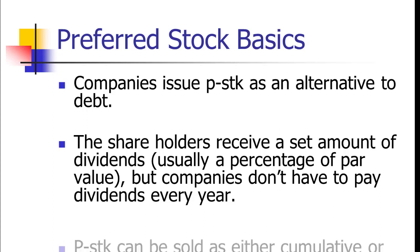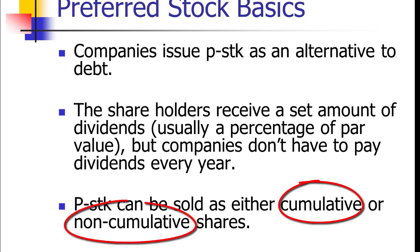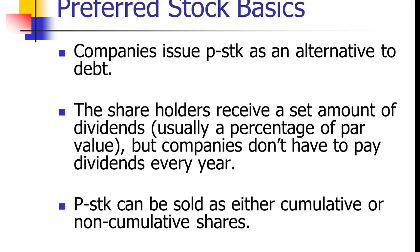When we issue preferred stock I have to make a choice: are we going to make it cumulative or non-cumulative? If it's non-cumulative and I miss a year — say this current year is really bad and I declare no dividend — then next year those preferred stockholders say 'hey, you missed last year' and I say 'tough.' You don't get the dividends for the years I miss. If they're cumulative, the opposite is true: if I miss a year I have to go back and pay them what I missed before I can pay any dividends to my common stockholders. If we miss a year we call it being in arrears. If I've got cumulative preferred stock and I'm in arrears, I owe all of the amount I'm in arrears plus the current year's value before I can pay anything to my common stockholders. That is really what makes these shareholders preferred.